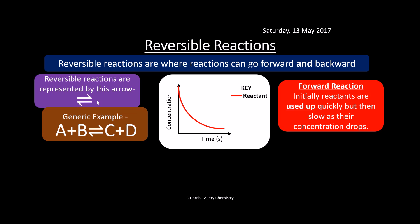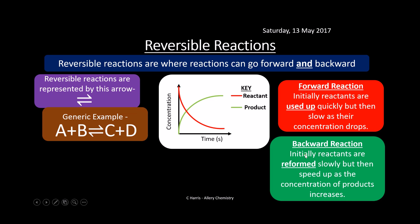In the forward reaction, initially reactants are used up pretty quickly because there are lots of them, so there's plenty of opportunity for them to collide. As time goes on their concentration drops dramatically. Products are produced really quickly at first, but then slow down as the level of reactants decreases and there's less chance of them colliding — it's just the opposite of a reactant.